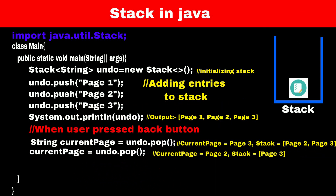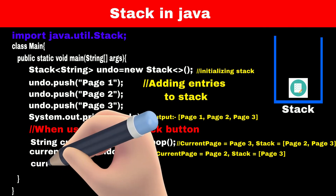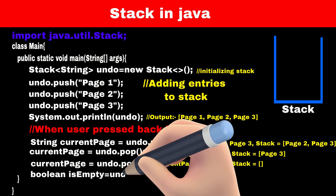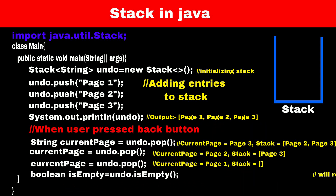If the user presses the back button again on page 3, we remove page 2 which is at the top of the stack. Similarly, page 1 will be removed if the user presses back again. Now the stack is empty, so we can disable the back button. To check if the stack is empty or not, we can use the isEmpty method.